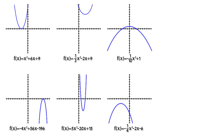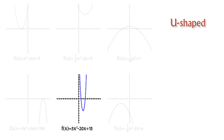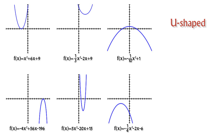Starting with a visual approach, let's take note of some qualities that each parabola has. First, we see that each parabola is u-shaped. Now, some are wider and others are narrower, but there's still a general u-shape to each one.